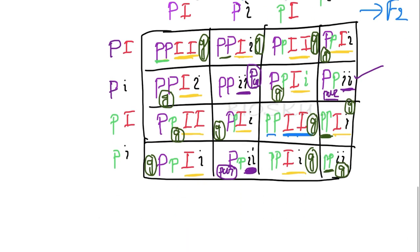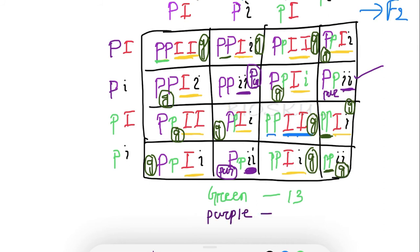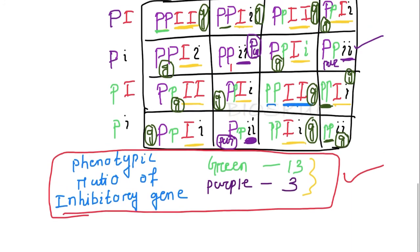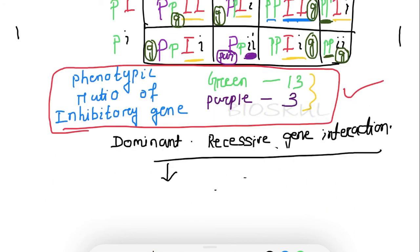So let's count: green color is 13 and purple color is only 3. So if you get a question asking for the phenotypic ratio of inhibitory gene interaction, the answer is 13:3.